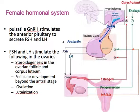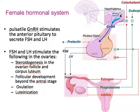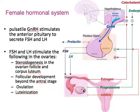The female hormonal system is governed by the hypothalamic-pituitary-gonadal axis. Pulsatile GnRH from the arcuate nucleus of the hypothalamus stimulates the anterior pituitary to secrete gonadotropins — FSH and LH. FSH and LH then stimulate the ovaries to initiate ovarian steroidogenesis in the ovarian follicle and the corpus luteum, depending on which stage of the female reproductive cycle.